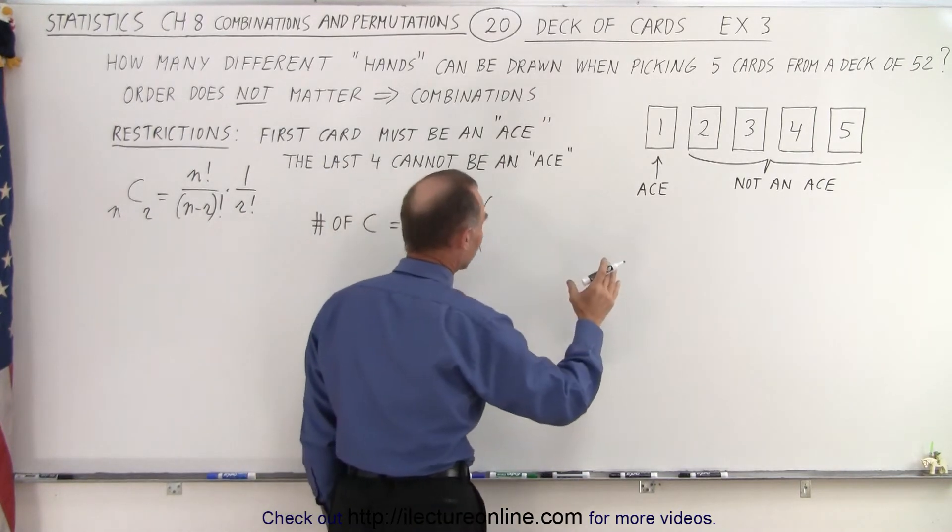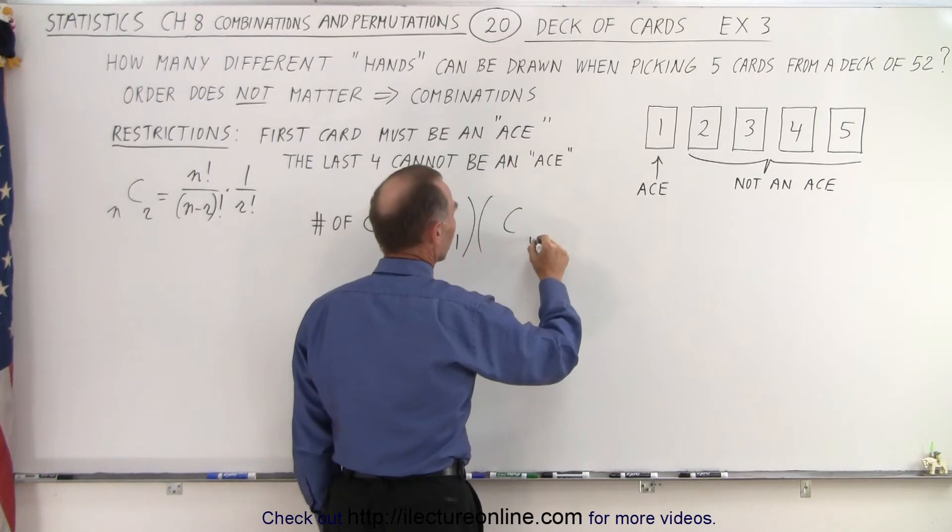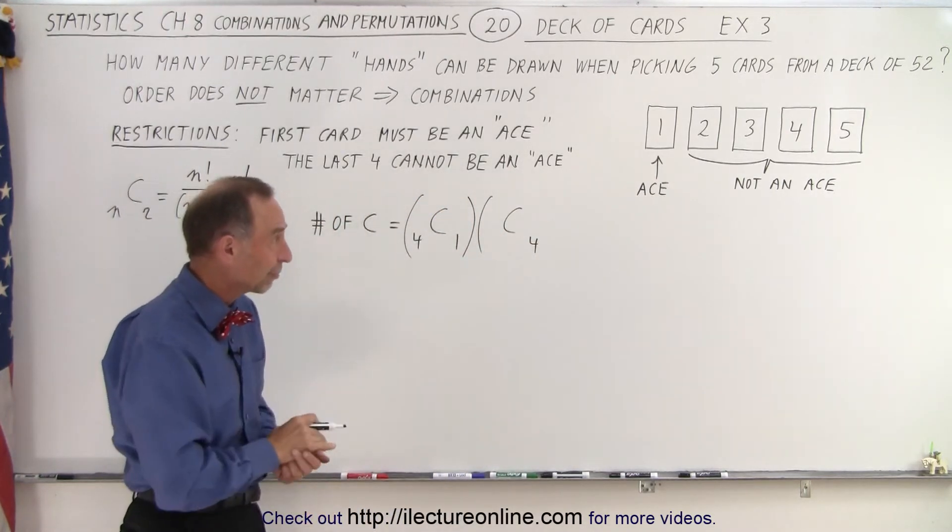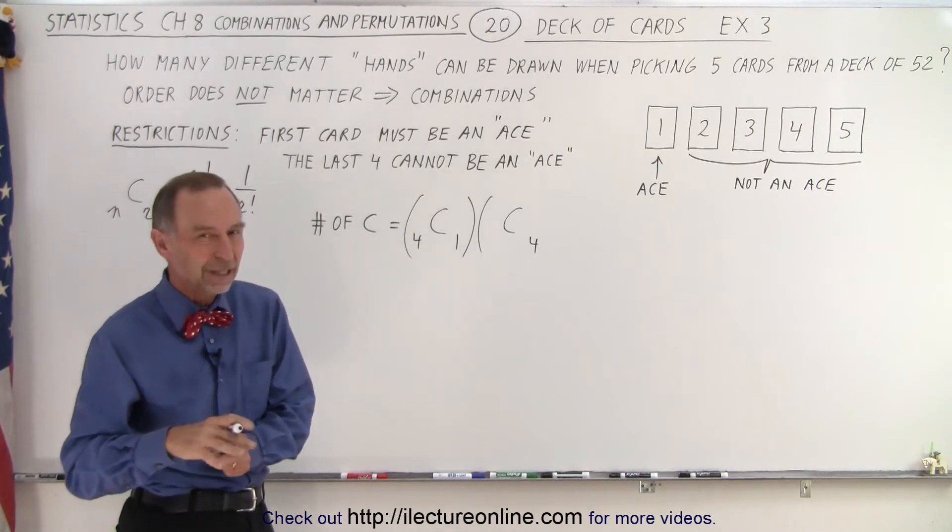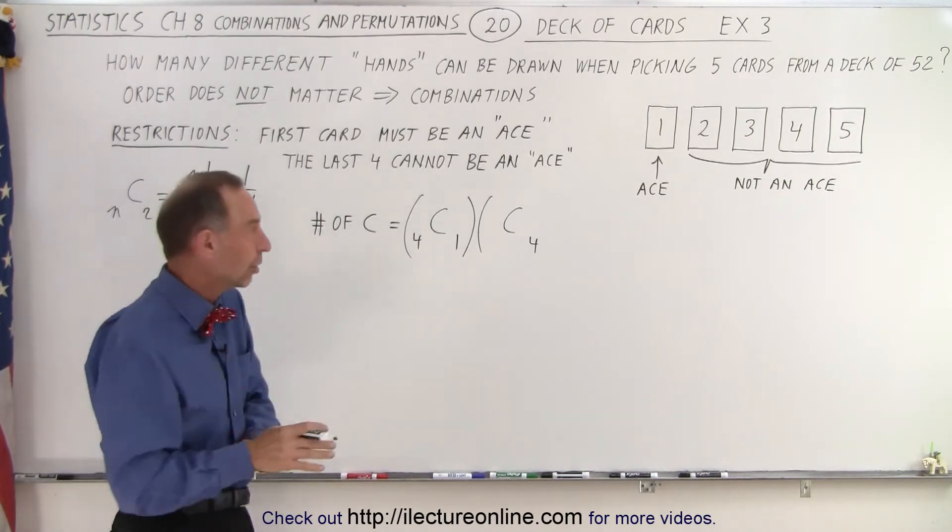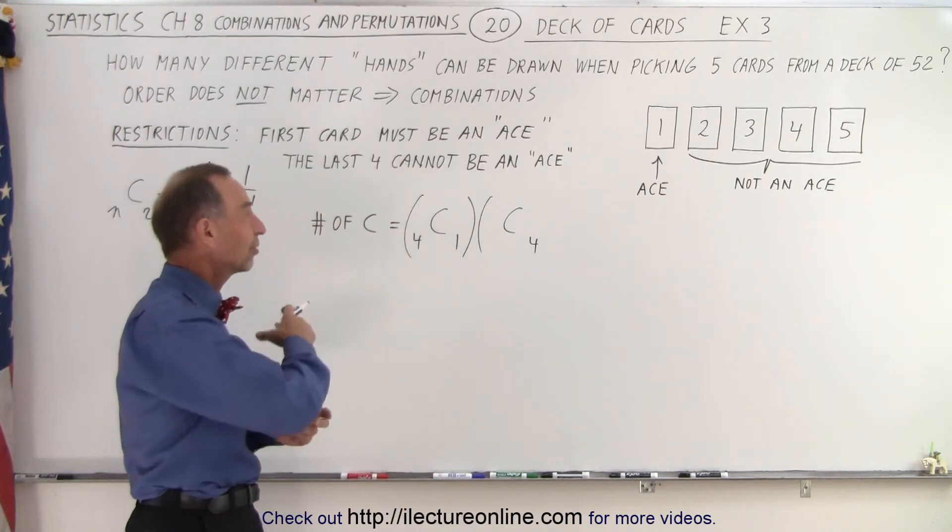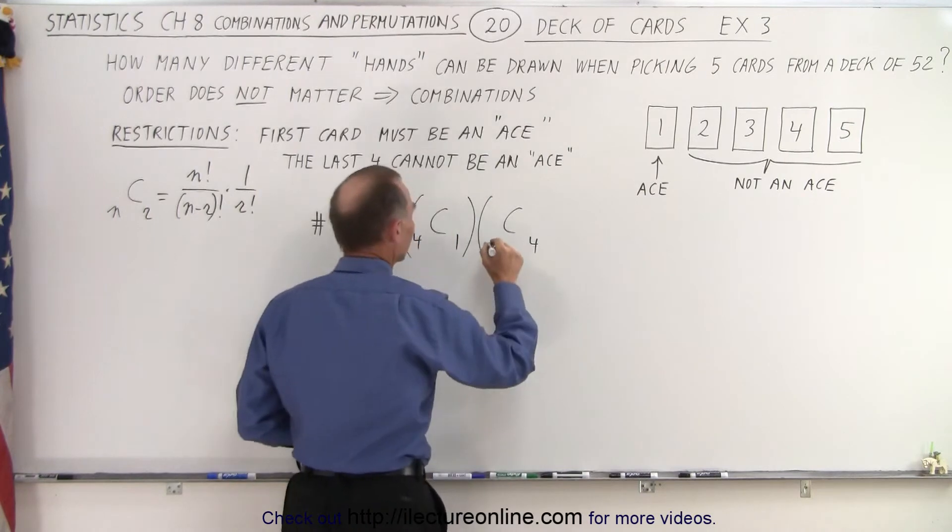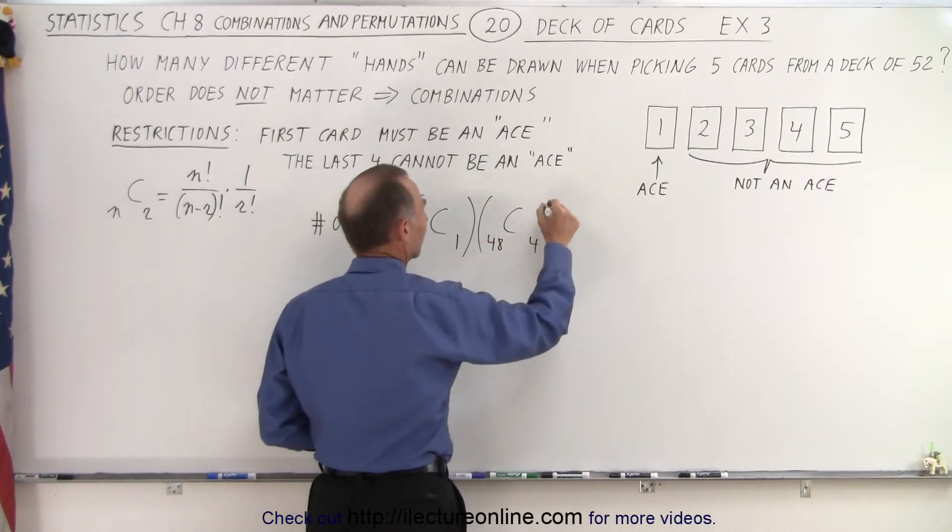Now we're going to pick four cards, but how many cards are left to pick from? Remember once we pick the ace on the first one, we're not allowed to pick an ace for the next four cards, so now there's only 48 cards remaining because the four aces are no longer permissible for the last four picks. So that means there's only 48 left to pick from.